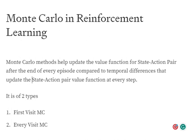In Monte Carlo, we update the value function for the taken state-action pair. For example, we have five steps — five states in a particular episode. At state s1 we take action a1 and get some reward, then at state s2 we take action a2 and get some reward, and so on. Once the episode ends, we go back and update the value function for each state-action pair.